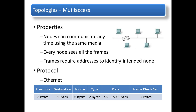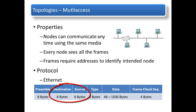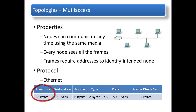Ethernet provides unacknowledged connectionless service over a shared media using CSMA/CD as the media access method. Shared media requires that Ethernet packet headers use a data link layer address to identify the source and destination nodes. As with most LAN protocols, this address is referred to as the MAC address. An Ethernet MAC address is 48 bits and is generally represented in hexadecimal format. Unlike the point-to-point protocol frame, an Ethernet frame consists of a preamble used for timing synchronization, which helps other interface cards distinguish consecutive bits.